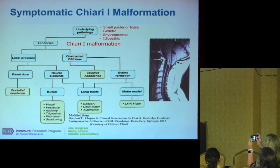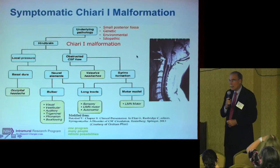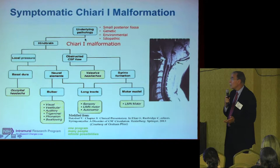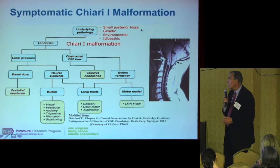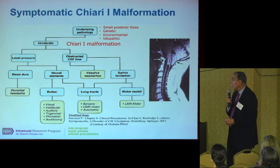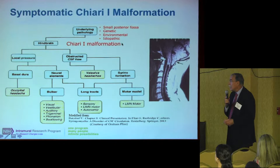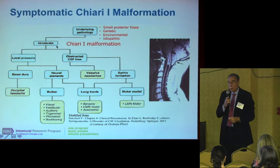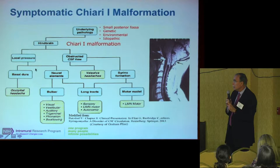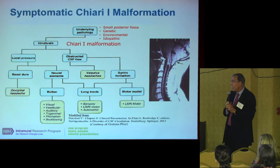When you think of Chiari malformation, there's an underlying pathology that starts everything up. It's either a small posterior fossa — some people have family members with a genetic component — environmental, or some people present after trauma with their Chiari even though it's presumably been there their whole life, and then idiopathic, which is the most common type. That leads to hindbrain herniation, another name for Chiari 1 malformation, and then symptoms come from either local pressure on the dura or obstructed CSF flow.